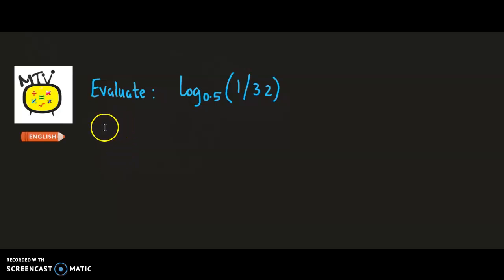So first of all we assign this log value a name, say x. Let log of 1 by 32 to the base 0.5 be equal to x.